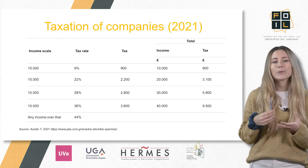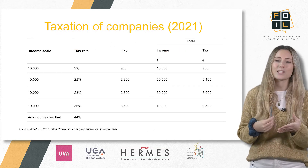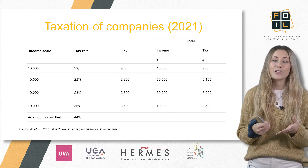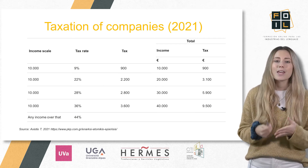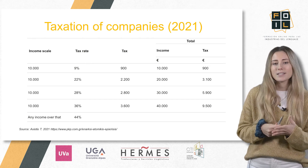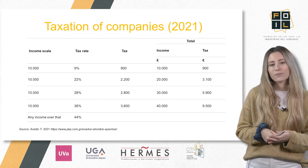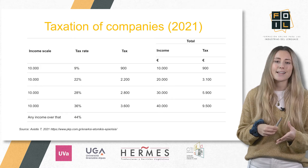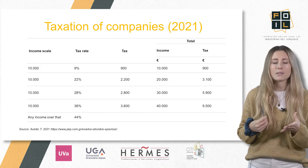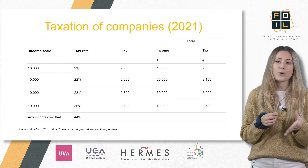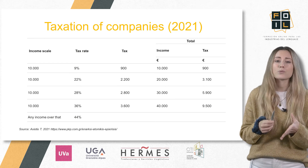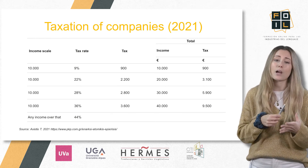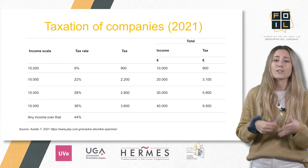In this table we can see the taxation of companies in Greece for 2021. If the income is €10,000, the corresponding tax is €900. For the additional €10,000, a tax rate of 22% is applied, which means that for an income of €20,000, the corresponding tax is €3,100, and so forth.